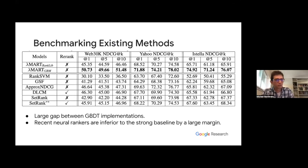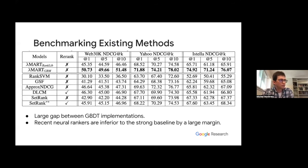Even comparing to the weaker RankLib baseline, many proposed neural rankers are inferior or merely comparable. Techniques such as ApproxCG are on par or slightly worse than RankLib. When compared to LightGBM, they are way behind. Making progress on neural learning to rank requires thinking about what it takes to become competitive with traditional GBDT implementations.